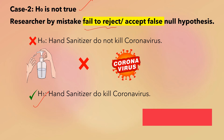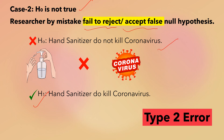But if the researcher by mistake fails to reject — or you can say accepts — the false null hypothesis, the researcher will come to the conclusion that hand sanitizer does not kill coronavirus, which is actually wrong. Actually, hand sanitizer does kill coronavirus. This is Type 2 error: the researcher failed to reject, or accepted, the false null hypothesis.